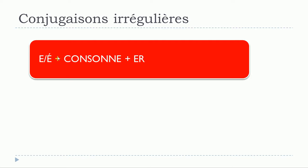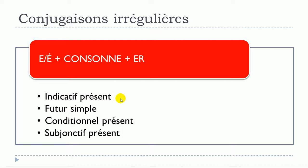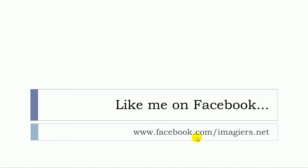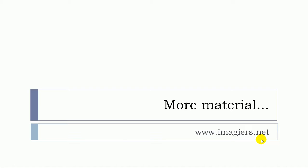So remember that for this subgroup of verbs — the ones ending with 'e' or 'e' accent aigu, then a consonant, then 'er' — the following tenses will have slight changes: indicatif présent, futur simple, conditionnel présent, and subjonctif présent. For all other tenses, just conjugate the verb as normal. If you want more videos, visit youtube.com/imagiers, like us on Facebook, and for more material go to www.imagiers.net. Have a great day, bye bye!